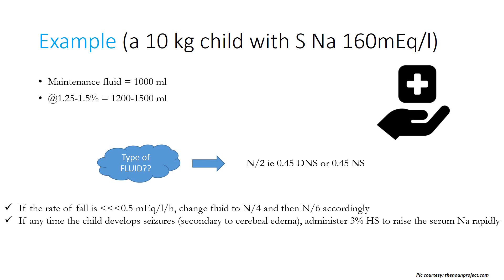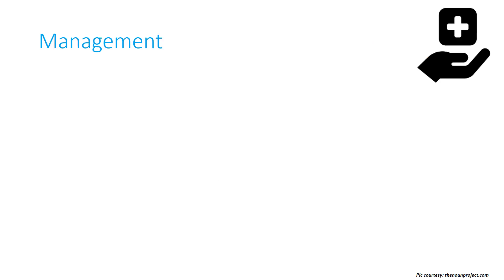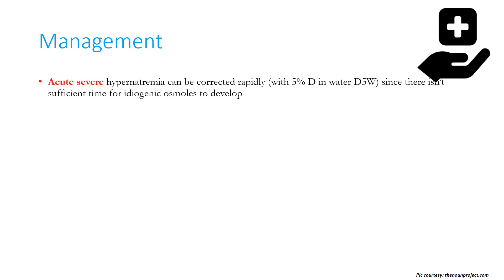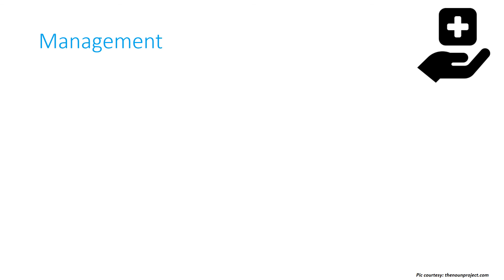If the rate of fall in sodium is less than 0.5 mEq per litre per hour, change fluid to N/4 or N/6. If the child develops seizures secondary to cerebral edema, administer 3% hypertonic saline to raise serum sodium rapidly. In patients with acute severe hypernatremia, serum sodium can be corrected rapidly with D5W (5% dextrose in water) since there isn't sufficient time for the brain to develop idiogenic osmoles.